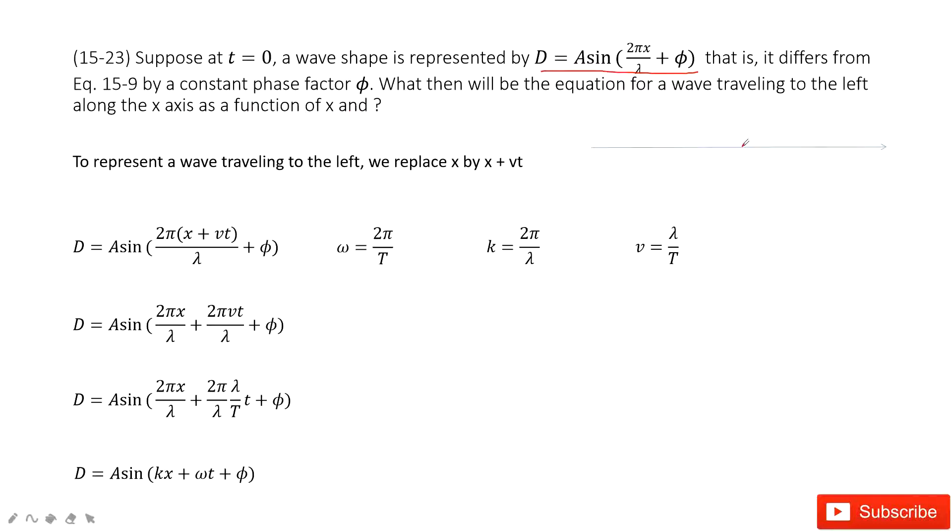At initial time t equals 0, the wave is at this position. Then after time t, the wave travels left. How much distance did it move? vt.